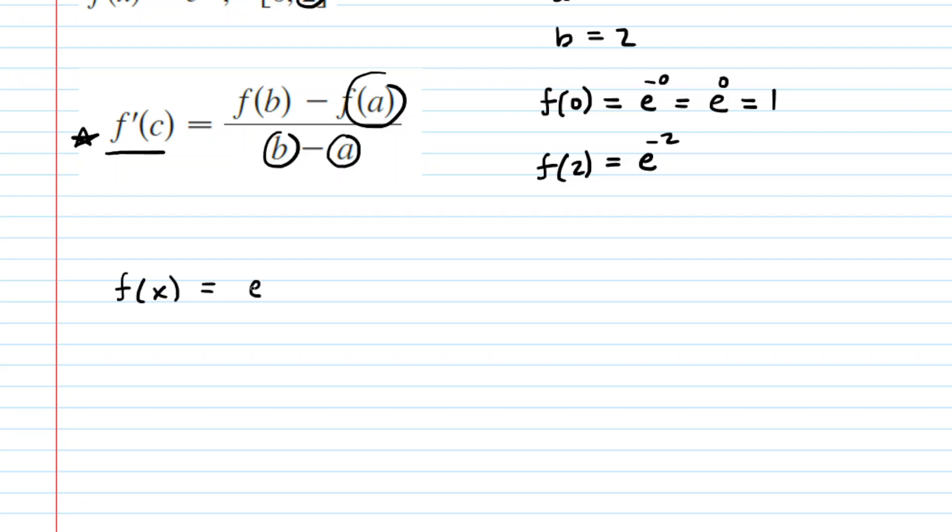So we'll rewrite our function as f of x is equal to e to the negative x, and then we're going to compute its derivative, so we'll write down f prime of x. Now for the derivative of an exponential function, what you do is two things.